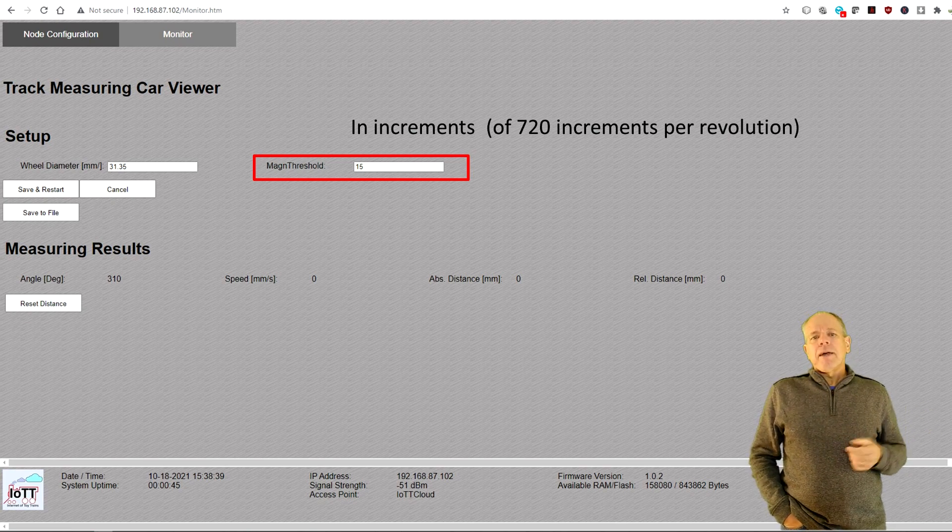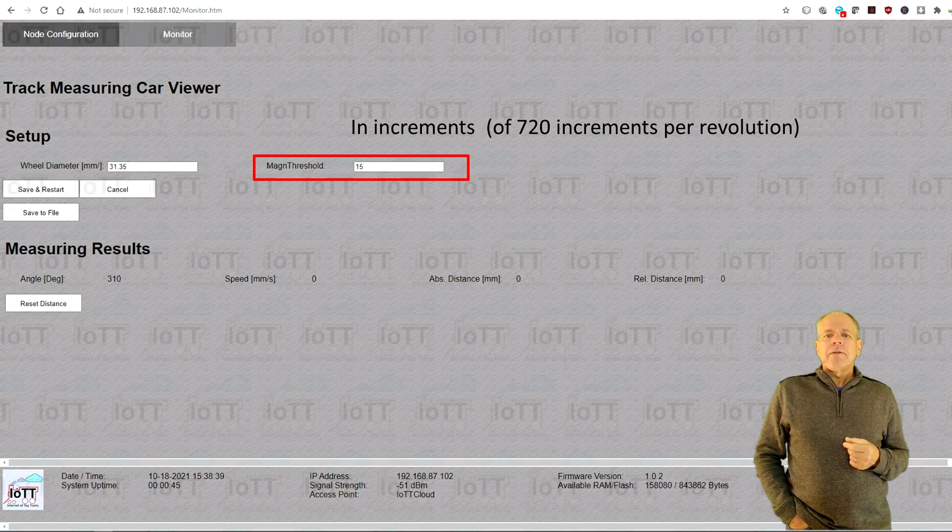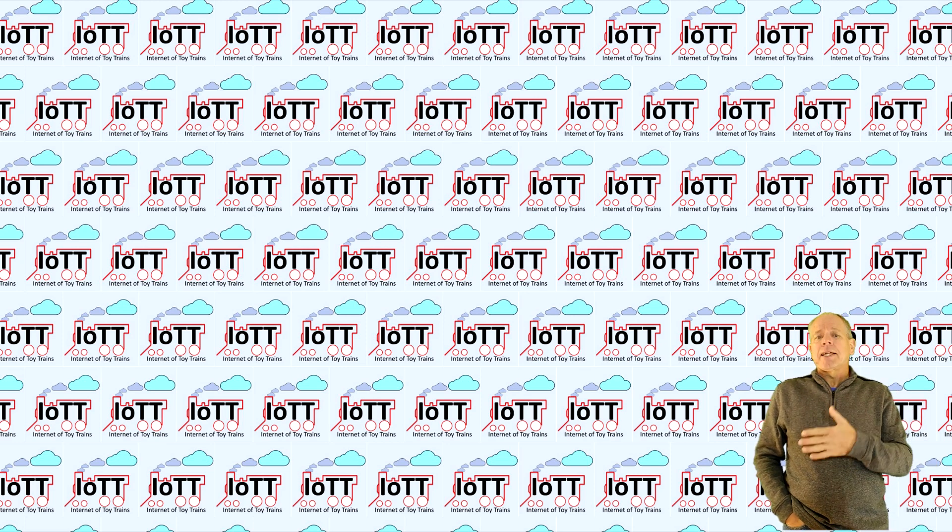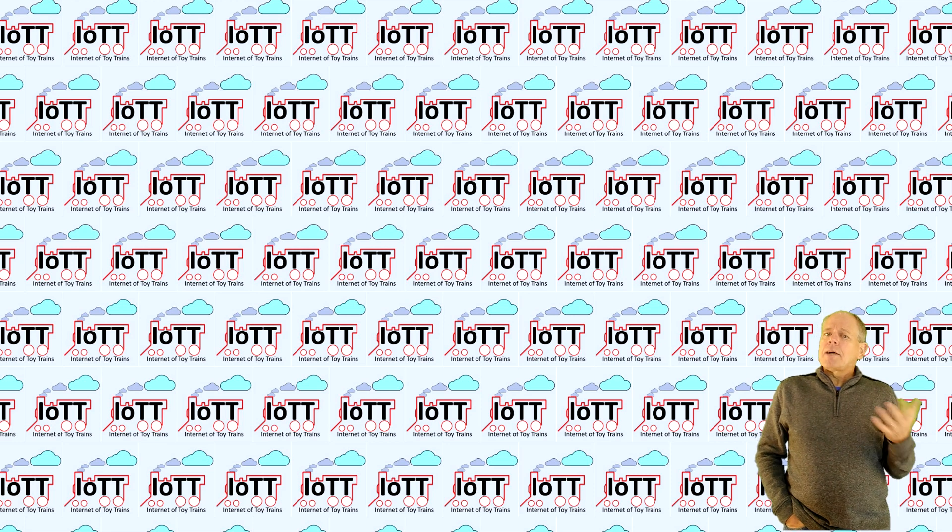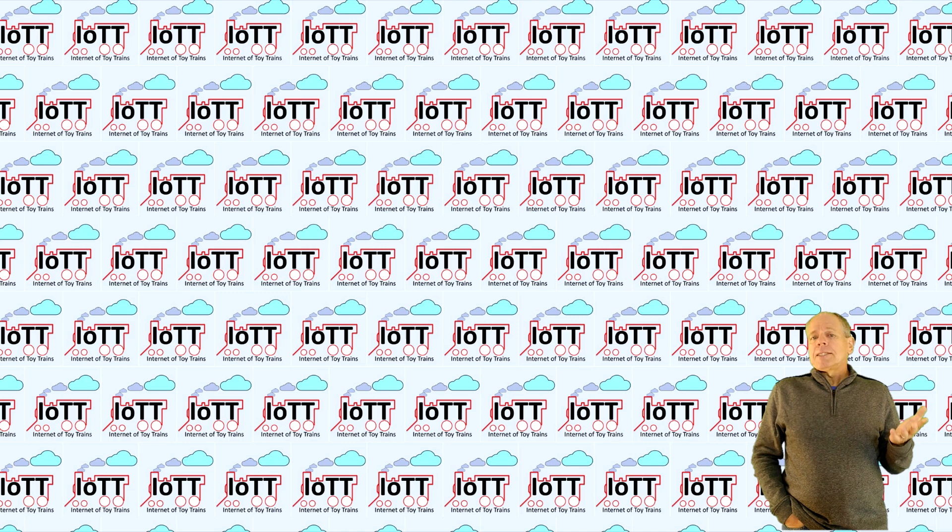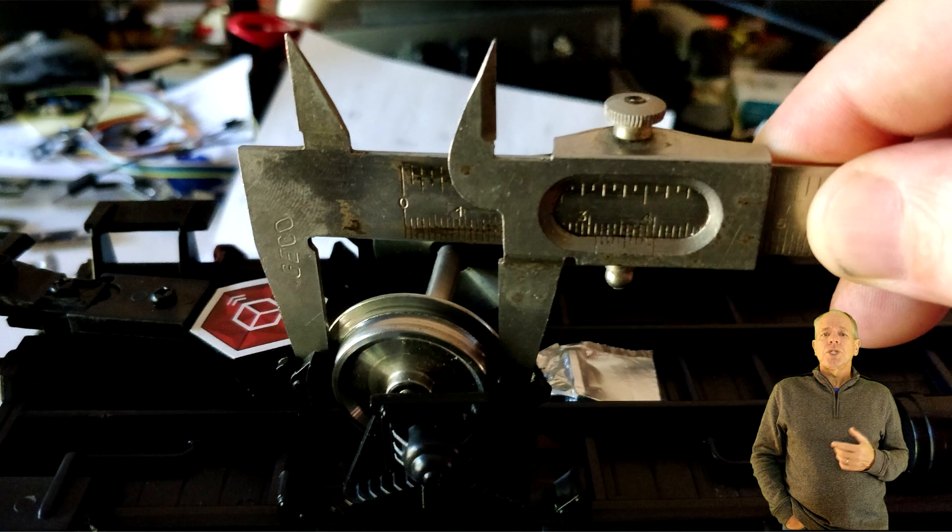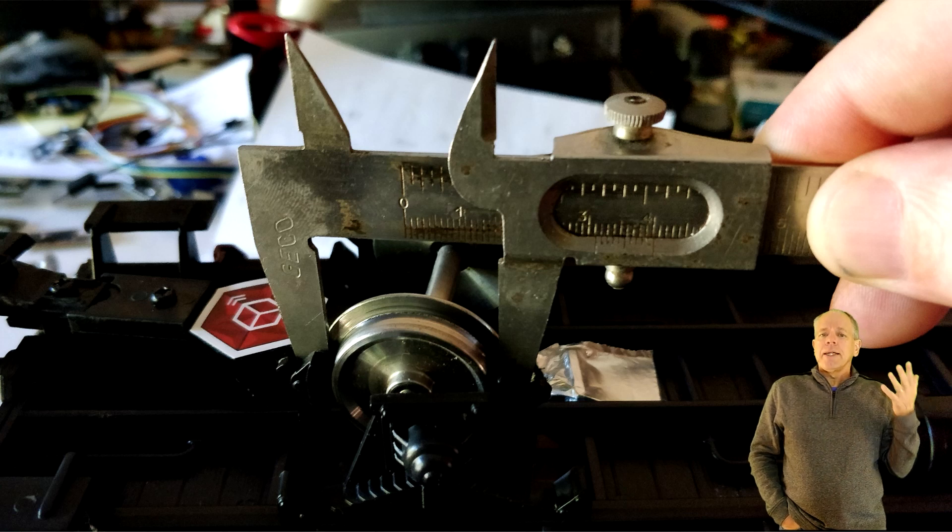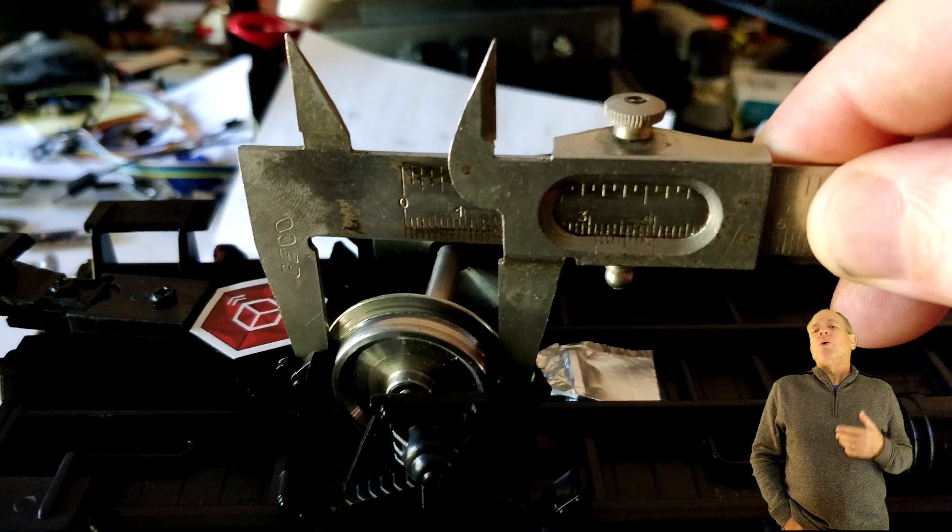As mentioned, the data on the webpage is updated once every second, but the software on the ESP32 is reading the sensor every 10 ms, so it calculates travel distance and speed 100 times per second. The sensor itself does 720 increments per full revolution, so with 31 mm wheel diameter the theoretical resolution is 0.135 mm or about 1/200th of an inch.